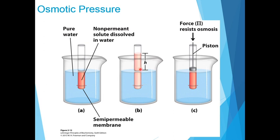In the final state B, water has moved into the solution of the non-permeant compound. As water moves into the tube, it dilutes the solution and raises the height of the column. At equilibrium, the force of gravity acting on the solution in the tube exactly balances the tendency of water to move into the tube, so the concentration of water is equal on both sides.